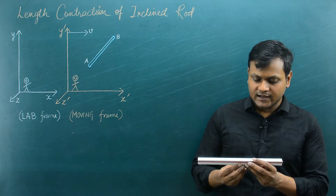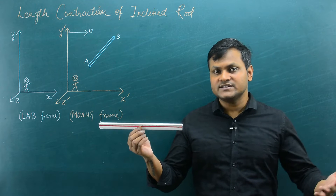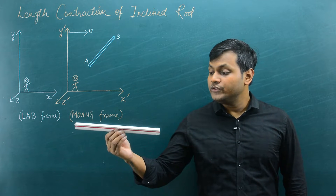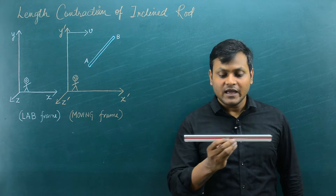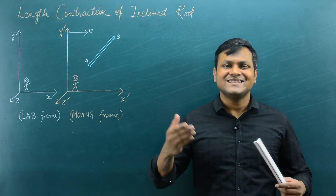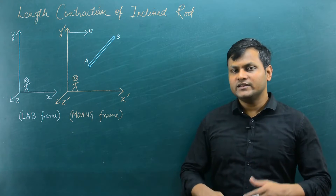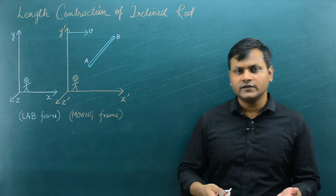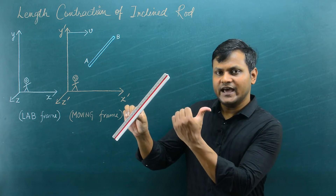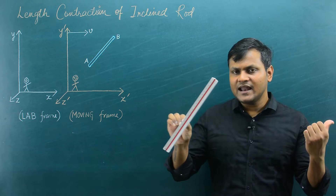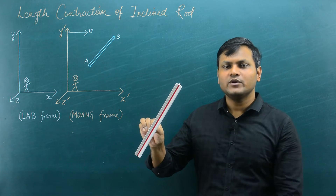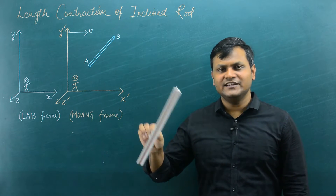So for example, if there is a rod or a stick or a meter scale going in a particular direction and it is in relative motion with respect to me, then if I make a measurement of its length, that length will appear to be contracted compared to its rest length or proper length. In this video, I want to explore what happens if that scale is traveling in a direction inclined with respect to its longitudinal length — what happens to the magnitude of its length and to the angle of inclination.